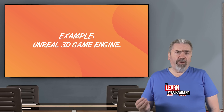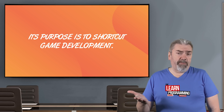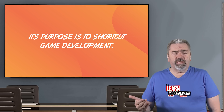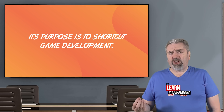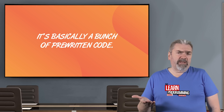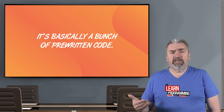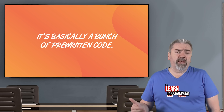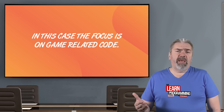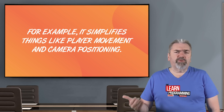Now consider an example: the Unreal game engine. The purpose of that game engine is to shortcut game development, so it's basically the infrastructure to create computer games. That's a bunch of pre-written code that tons of programmers have accessed, used, and developed over the years. And there's all manner of game-related stuff — things like player movement, camera positioning, and all those sorts of things.